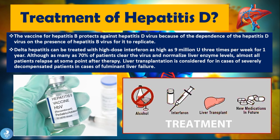Liver transplantation can be considered in cases of severely decompensated patients or fulminant liver failure. Decompensation means the body can no longer compensate for the failing liver and is unable to clear toxic materials or carry out detoxification. Additionally, alcohol and certain medications should be avoided, as they are metabolized by the liver — and if the liver is in a state of failure or decompensation, we don't want to stress it further.